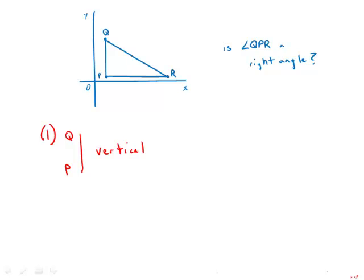If we know PQ is vertical, we have no information about the exact direction of PR. PR could be exactly horizontal or it could be a few degrees above or below the horizontal. So statement number one by itself is insufficient.